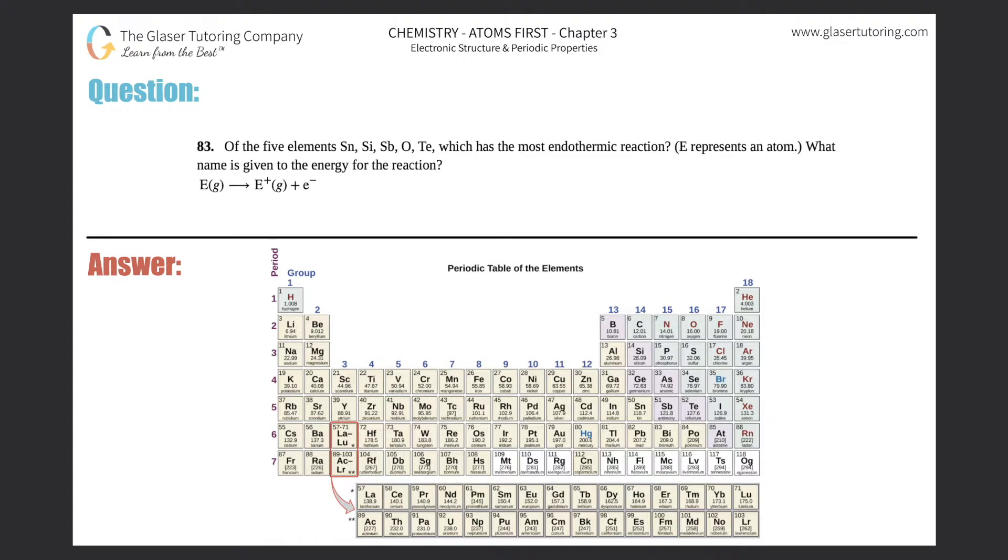Number 83: Of the five elements S, N, Si, Sb, O, and Te, which has the most endothermic reaction? E represents an atom. What name is given to the energy for this reaction? They provide you the reaction right here. We did a very similar question in number 82, so if you want more practice you could go back and check that one out. Let's start this one.